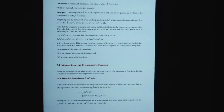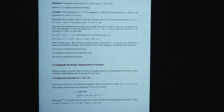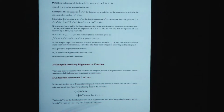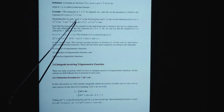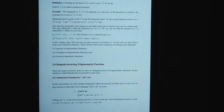Definition. A formula of the form: integration of f(x, n) dx = g(x) + integration of f(x, k) dx, where k is less than n, is called a reduction formula. Example: the integrand in integration of x^n e^x dx depends on x and also on the parameter n, which is the exponent of x. Let I_n = integration of x^n e^x dx. Integrating this by parts with x^n as the first function and e^x as the second function gives: I_n = x^n e^x minus n times the integration of x^(n-1) e^x dx.